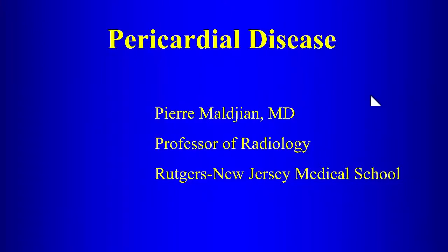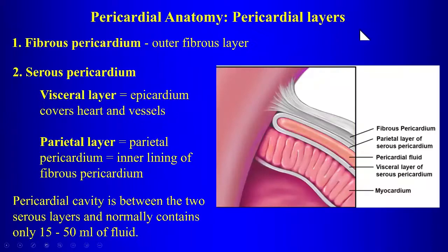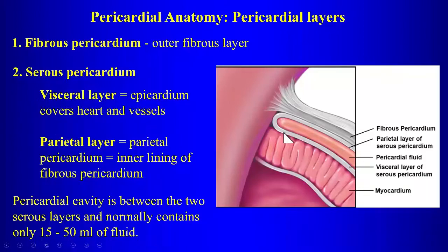Today we're going to talk about pericardial disease. We have the layers of the pericardium: the fibrous pericardium, which is the outer fibrous layer, and then the serous pericardium. It has a parietal layer, which lines the outer fibrous layer, and then a visceral layer that covers the heart and the great vessels. The space between those two layers is the pericardial cavity, which normally contains about 15 milliliters of fluid.